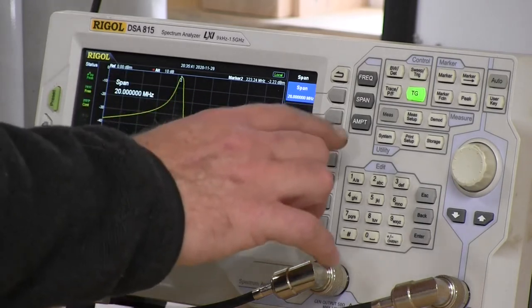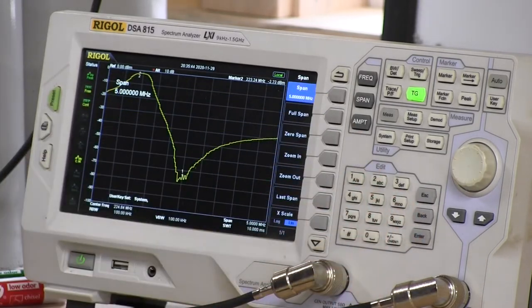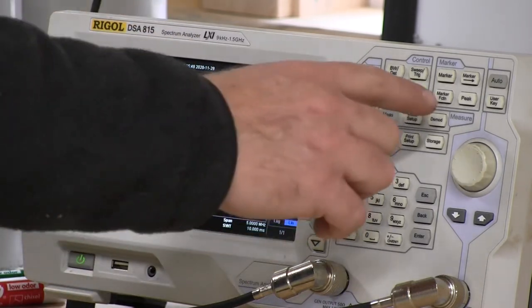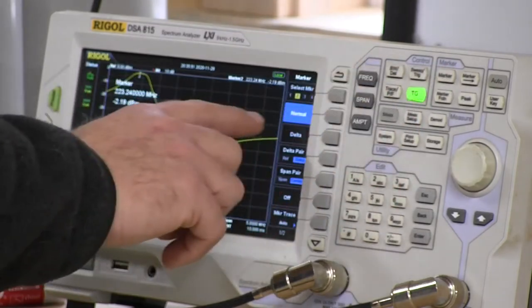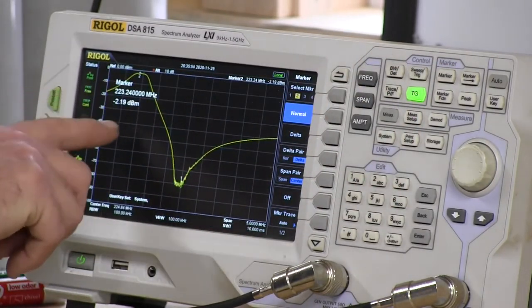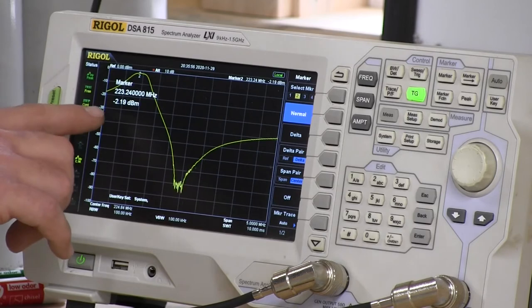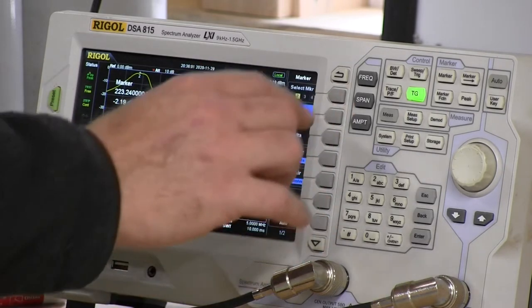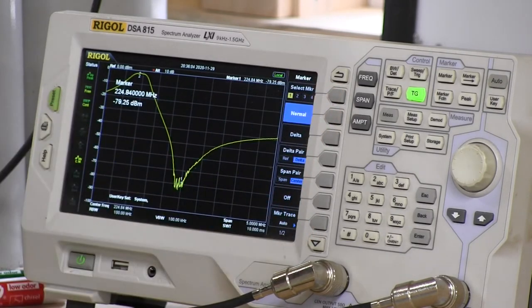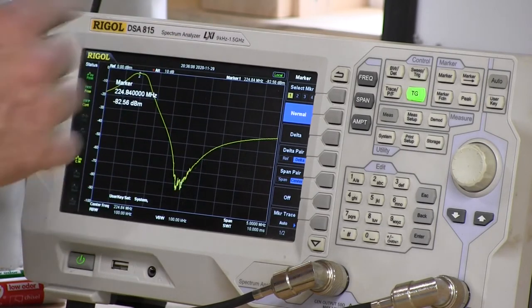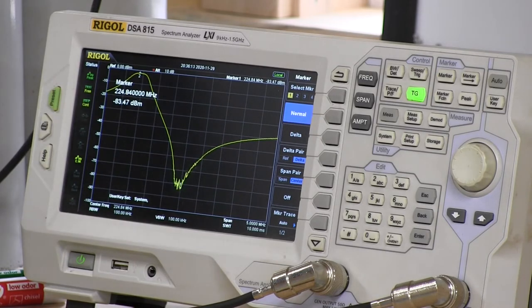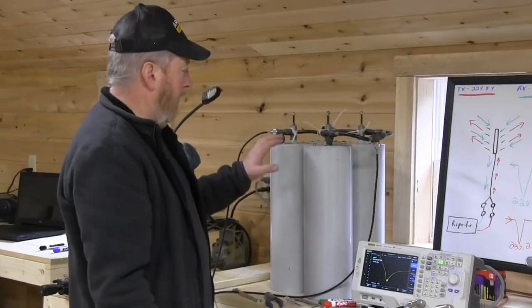Our goal is to make that marker 2 as high as we can and as narrow as we can. By clicking on marker and selecting marker 2, you'll see that I've got 2.19 dB of loss coming in. So now we're going to pan up to these duplexers and show you what we're doing.